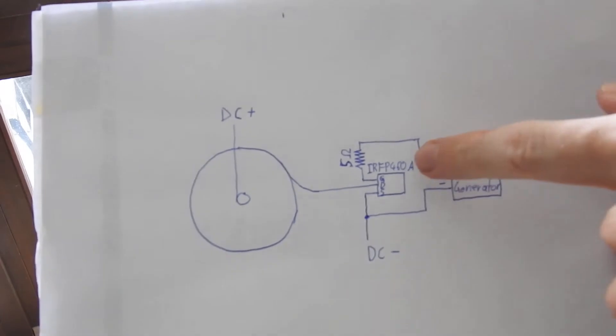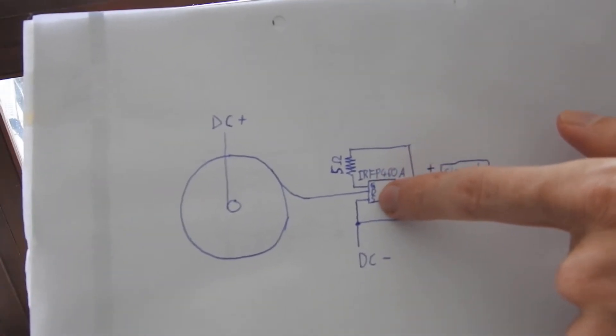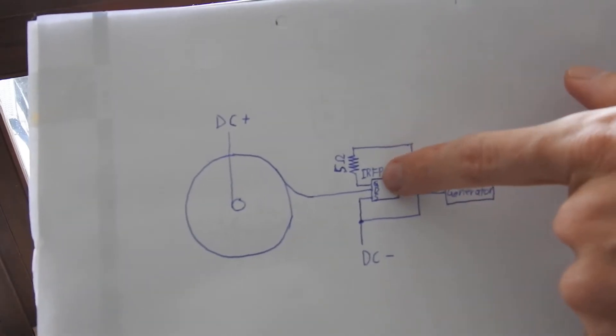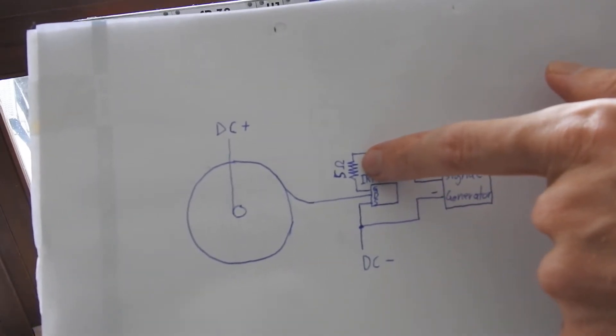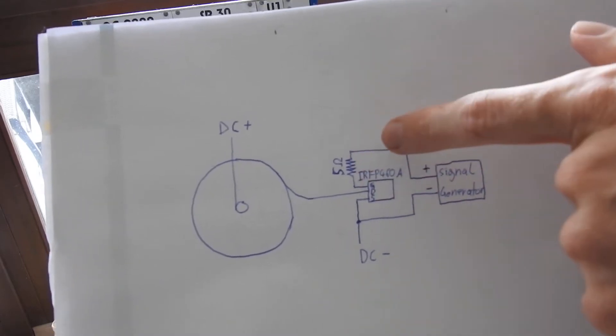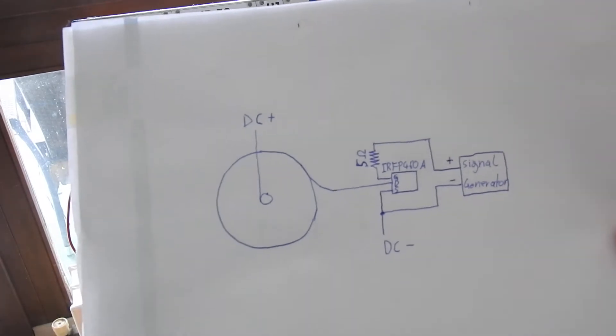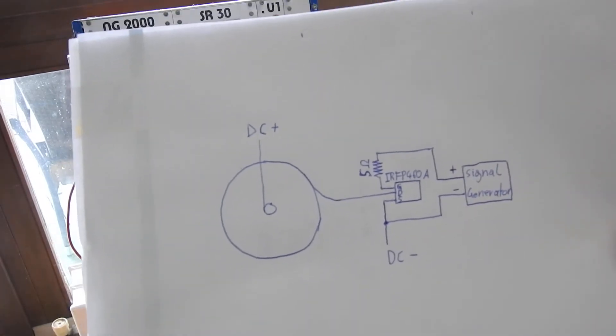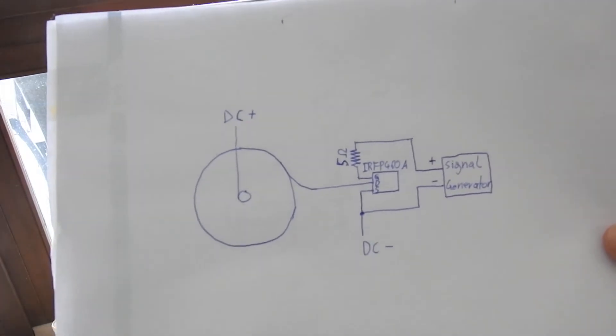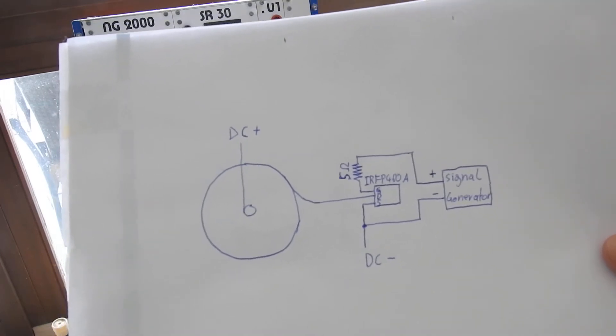We have here gate, drain, and source of the MOSFET. To protect the gate we have to use a small resistor. The value isn't that important. Right now I use a 5 ohm resistor, but I've tried with up to 150 ohm. It doesn't really matter what kind of resistor you use unless it's too high of course.